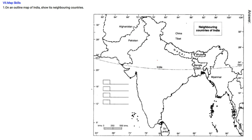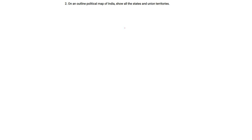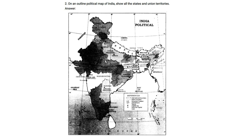On an outline map of India, show its neighboring countries: Pakistan, Afghanistan, China, Nepal, Bhutan, Bangladesh, Myanmar, and Sri Lanka. On an outline political map of India, show all the states and union territories — there are 29 states and seven union territories, including states like Uttar Pradesh, Andhra Pradesh, Maharashtra, as well as the Andaman and Nicobar Islands and Lakshadweep.